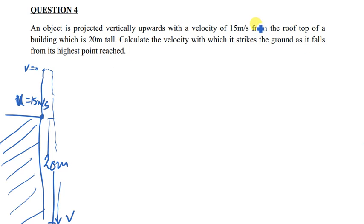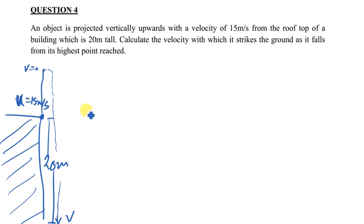The initial velocity u has been given to be 15 meters per second, from the rooftop of the building which is 20 meters tall. We need to calculate the velocity with which it strikes the ground as it falls from its highest point. We will find this by first finding the total time it takes to reach the ground.